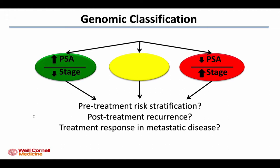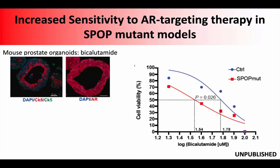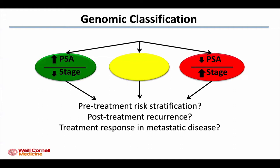We validated this in a prospective cohort of greater than 6,500 patients and saw the same thing — SPOP mutants had high PSAs but actually lower stage. What we think is happening is that this subset of cancer with altered androgen receptor signaling is making more PSA per cancer cell, so there can be lower stage tumors with higher PSA. In contrast, ERG-positive tumors make less PSA — so when you see an ERG-positive tumor with high PSA, it's because there's a lot of cancer cells. You can get a sense for how this might contribute to recalibrating PSA thresholds for pretreatment risk stratification, post-treatment recurrence, and treatment response in metastatic disease.